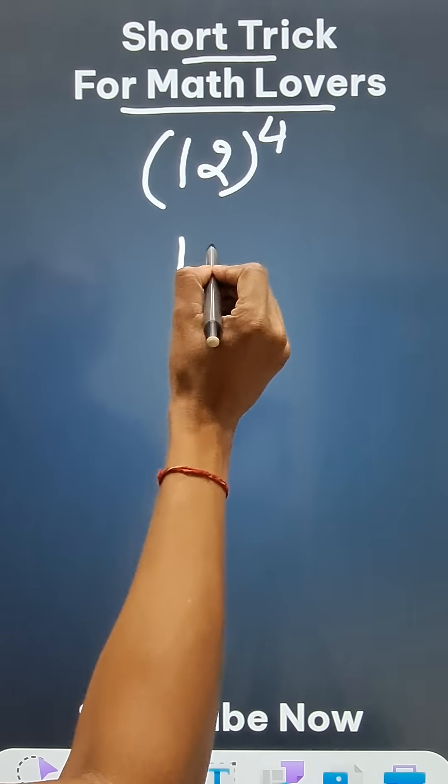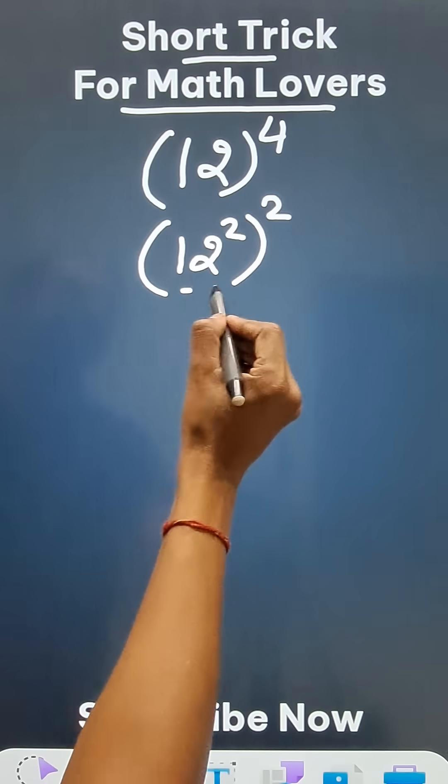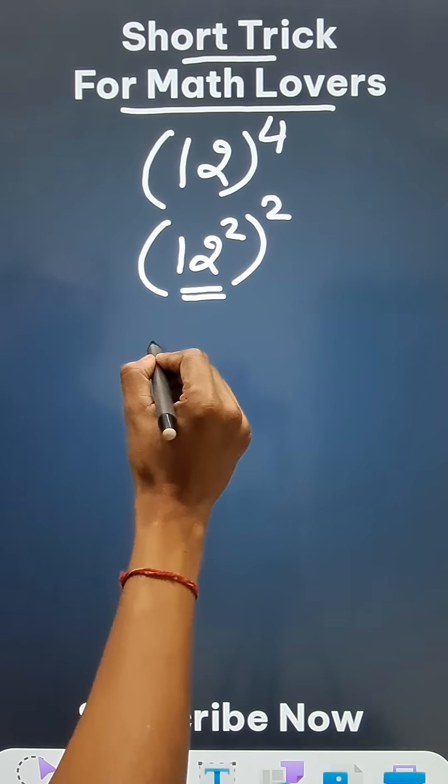So I should know what is 12 square, and then I have to square that number. 12 square we all know is 144.